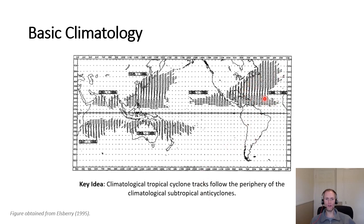We can see clockwise-curved vectors in the northern hemisphere indicating tropical cyclone motion around the southern, western, and northern sides of the subtropical anticyclone. Flow is primarily east to west in the eastern North Pacific on the southeast side of the subtropical ridge. In the southern Indian Ocean, flow curves counterclockwise around the subtropical anticyclone. The exceptions are the northern Indian Ocean — governed by the summertime monsoon — and the southwestern Pacific, where tracks follow south and eastward rather than the typical westward-then-curving-eastward pattern.